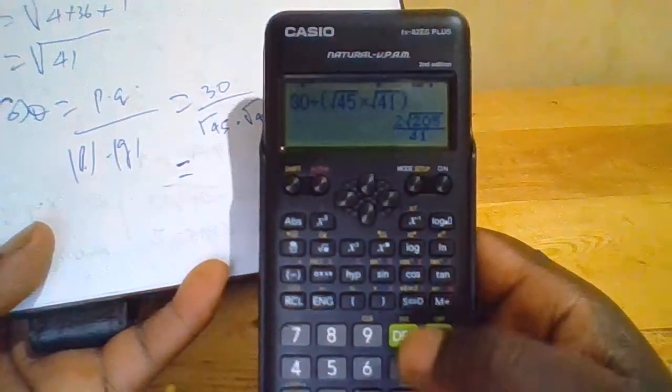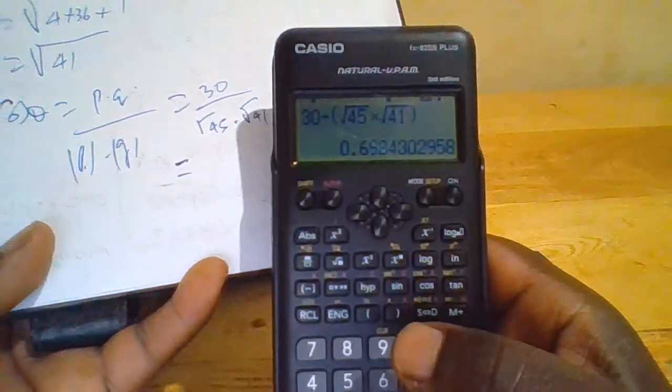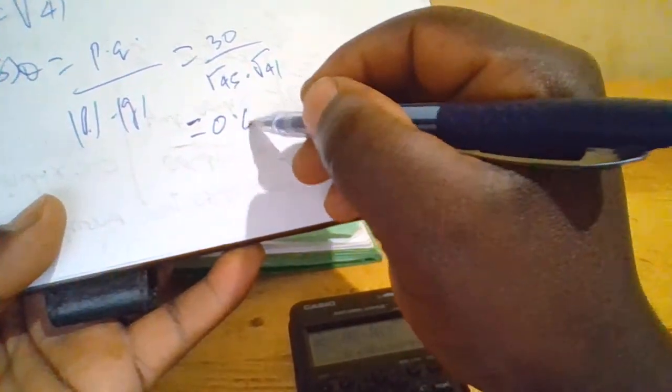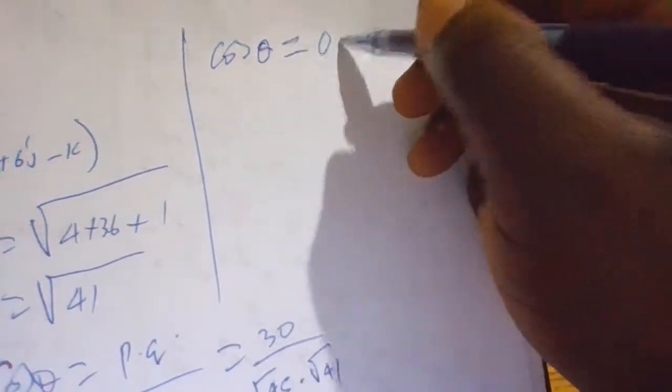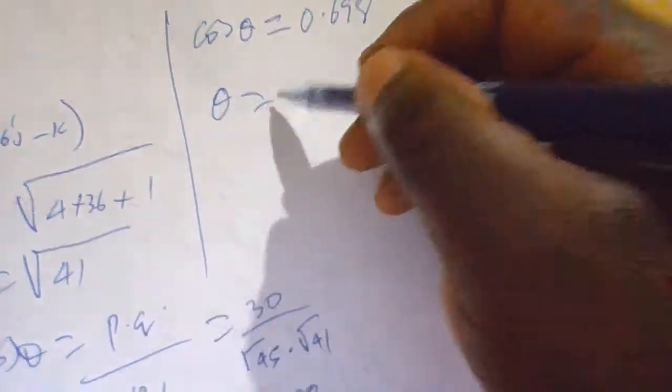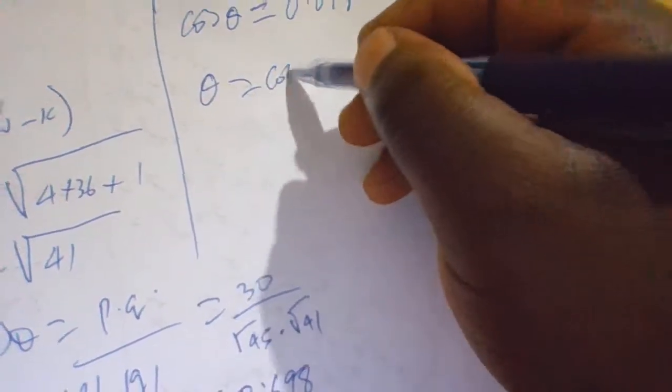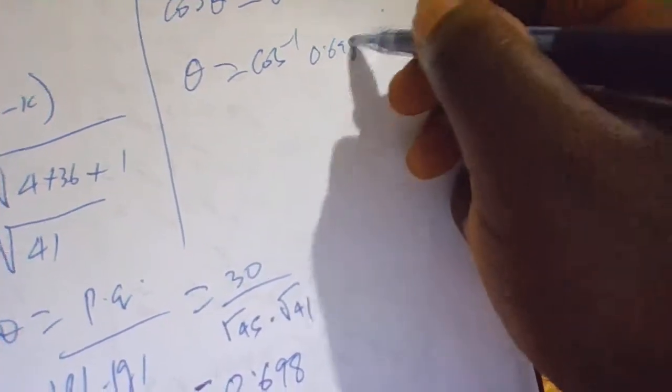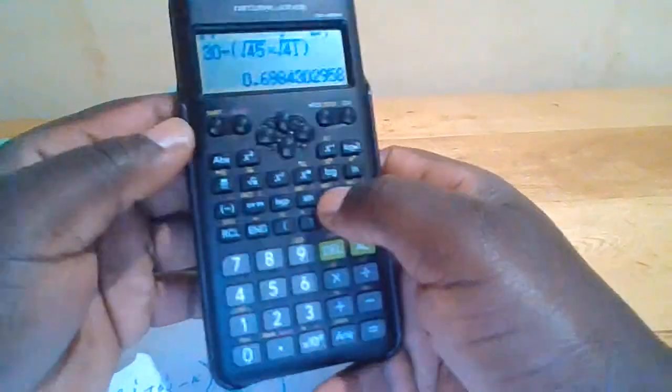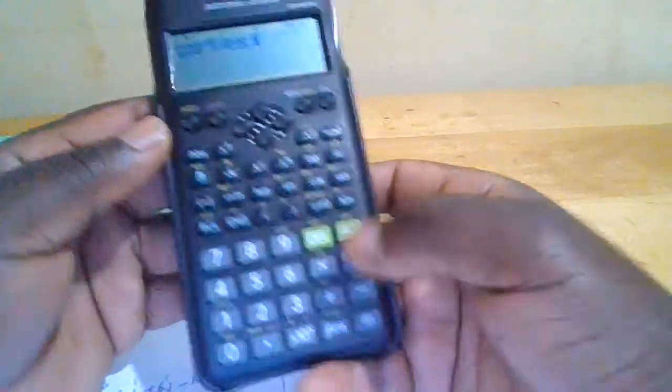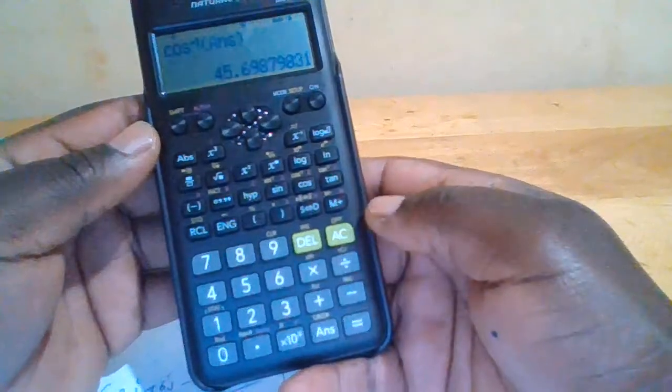This equals 0.698. We are saying that cos theta equals 0.698, so theta equals the cos inverse of 0.698, which equals 45.7 degrees.